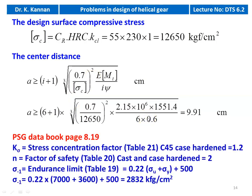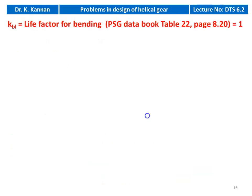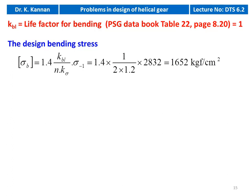To calculate the design bending stress: Kσ = 1.2 from table 21, N = 2 from table 20. Endurance limit σ₋₁ = 0.22(7000 + 3600) + 500 = 2832 kg/cm². Life factor Kb = 1. Design bending stress σB = 1.4 × 1 / (2 × 1.2) × 2832 = 1652 kg/cm².